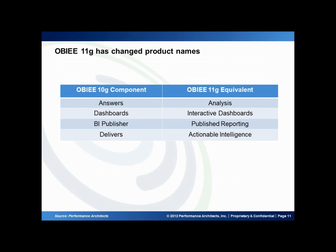You might have noticed there are some differences in product names between 10G and 11G. That can be confusing, but it's important to keep up to date. OBIE Answers is now called Analysis. Dashboards is now called Interactive Dashboards. BI Publisher is now called Published Reporting. And Delivers is now known as Actionable Intelligence. These are the same products — they've just been rebranded.